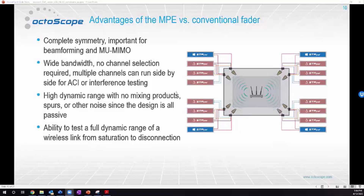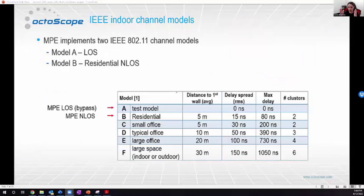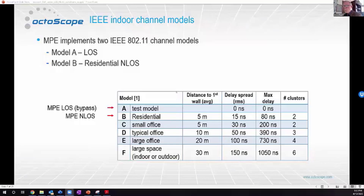What is the range of attenuation, and can MPE expand to support Model C? It cannot — it only does Model B with two clusters modeled. For attenuation, we have a 60 dB attenuator range inside. When the multipath switches in, it introduces an additional 10 to 20 dB of frequency-dependent attenuation. So between line of sight and non-line of sight, you have over 80 dB of range. Model C has a different power delay profile designed to emulate a small office.